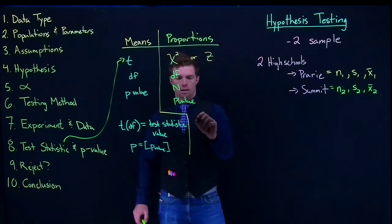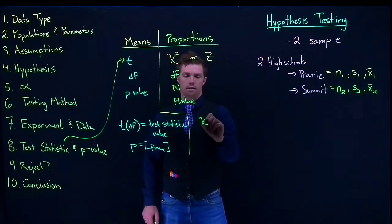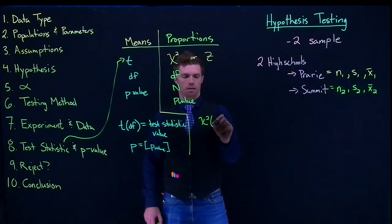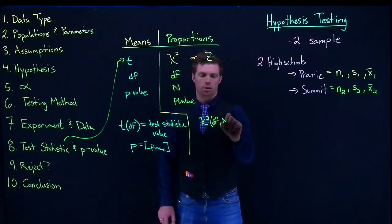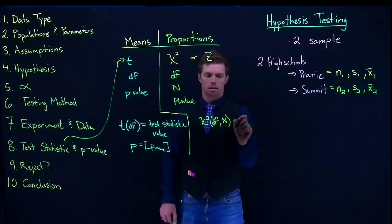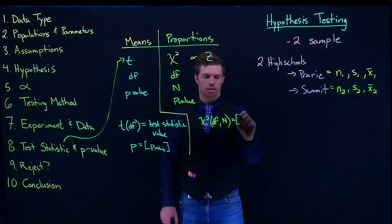And so as we do this, how we report for our proportions, we'll have it as chi-squared. Our first number which is the degrees of freedom, and then we need to know the n, and then we can say that equals whatever our chi-squared test statistic.